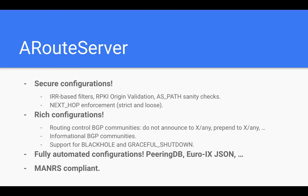All of this is done in a fully automated way. Every time ARouteServer is executed, it pulls information from several different external sources to produce an up-to-date configuration. For example, the max-prefix limit is pulled from PeeringDB, RPKI ROAs are automatically updated, and the same applies for IRR data.